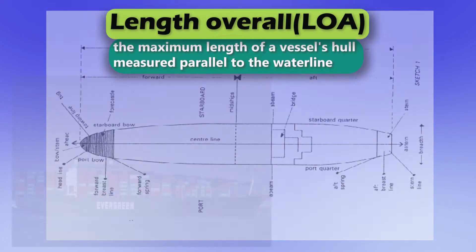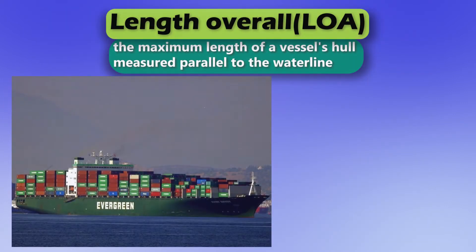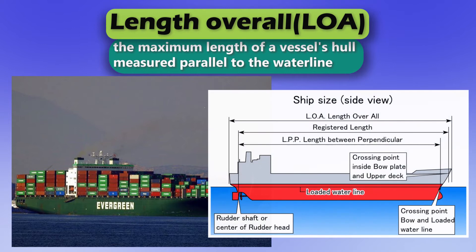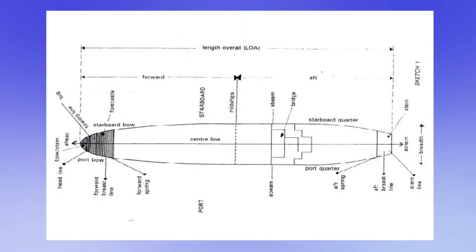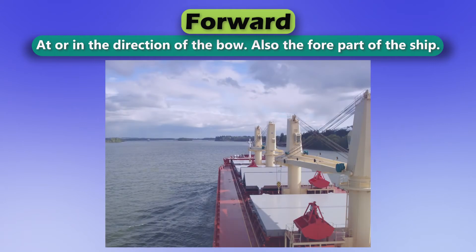Length overall: the maximum length of a vessel's hull measured parallel to the waterline. Forward: at or in the direction of the bow, also the fore part of the ship.